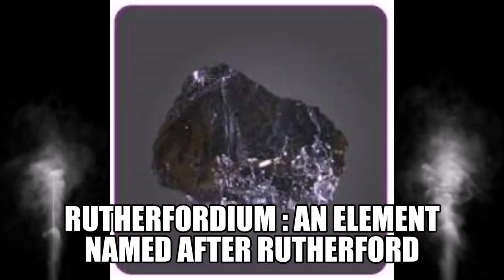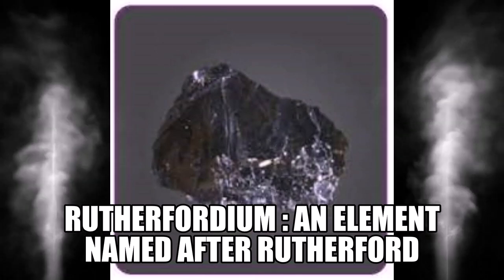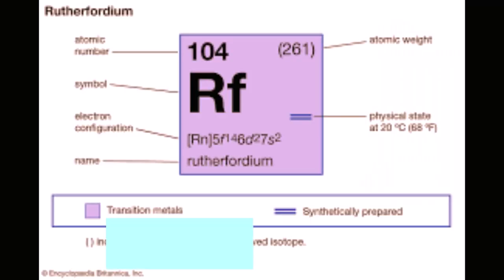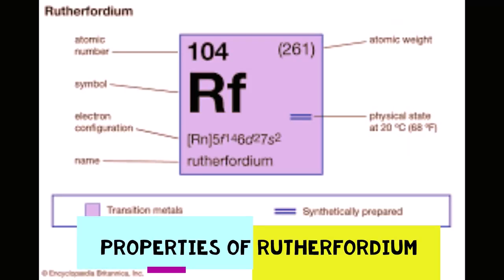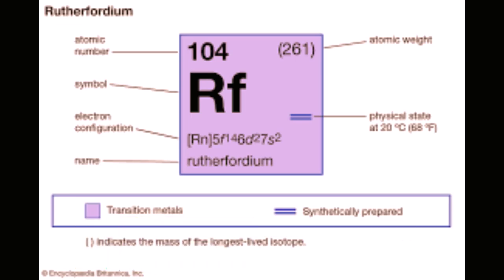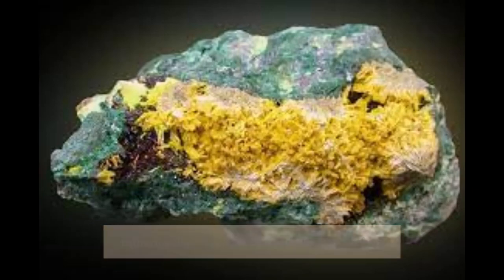Other than this award, an element called Rutherfordium is also named after this famous scientist. Rutherfordium has an atomic number of 104 and a mass number of 261. It is a D-block element classified as a transition metal and a radioactive element. Even a mineral called Rutherfordine is named after Rutherford.